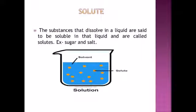Next we will discuss solute. The substances that dissolve in a liquid are said to be soluble in that liquid and are called solutes — for example, sugar and salt. Sugar gets dissolved in water, so here sugar is the solute. If we dissolve salt in water, then salt is the solute.